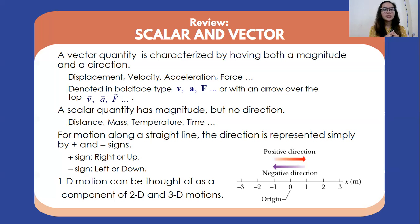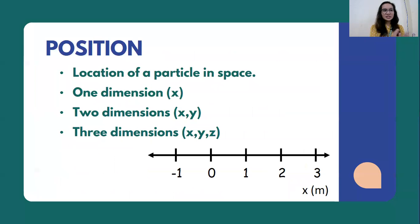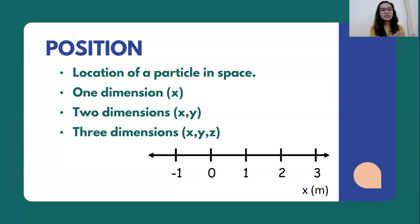It is important that we understand 1D motion since these are the components used when we discuss 2D or 3D motions. Position is the location of a particle in space. For one dimension, we use x for horizontal or y for vertical. For two dimensions, we use both x and y axes. For three dimensions, we have x, y, and z.